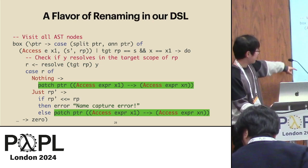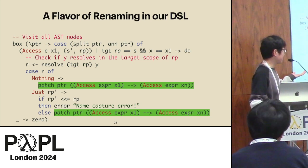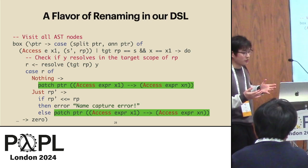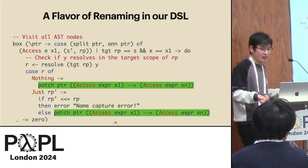Here I want to emphasize how we enforce transformations as patches. The patch function takes a pointer and a pattern and creates a transformation for you. In this way, we enforce transformations as patches, where an AST node can be changed at most once.